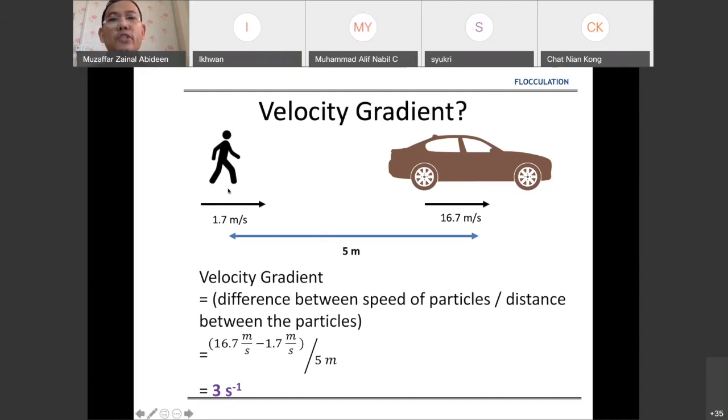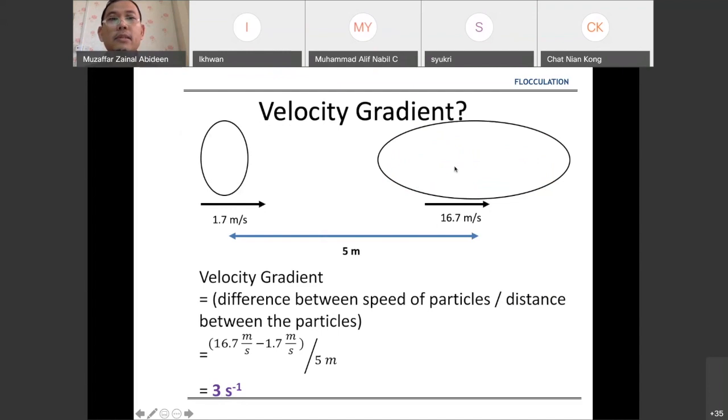Instead of imagining objects, we can assume in the water we have particles - big size of particles, smaller size of particles with different speeds. If you get the differences between those two particles' speed and then divide them with their distance to each other, you'll be able to obtain the velocity gradient.